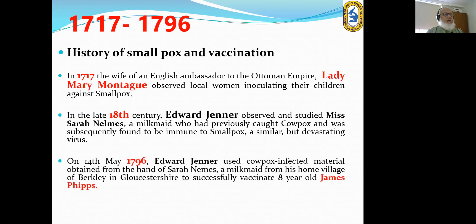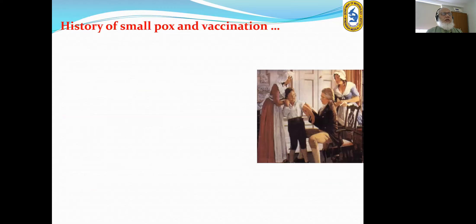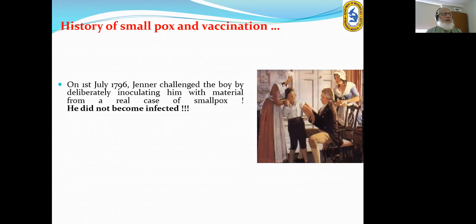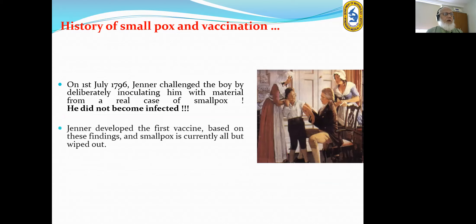On 14th May 1796, Edward Jenner used cowpox-infected material obtained from the hand of Sarah Nelmes, a milkmaid from his village, to successfully vaccinate 8-year-old James Phipps. Then in July 1796, Jenner challenged the boy by deliberately inoculating him with material from a real case of smallpox, and he did not become infected. This is the history of vaccination — Jenner developed the first vaccine based on these findings, without knowing the virus itself.